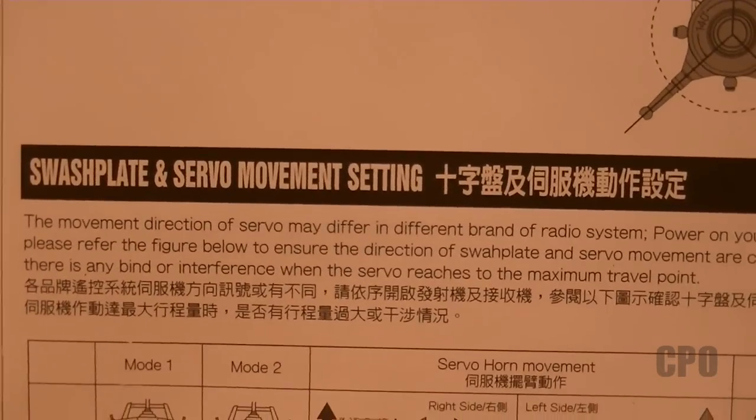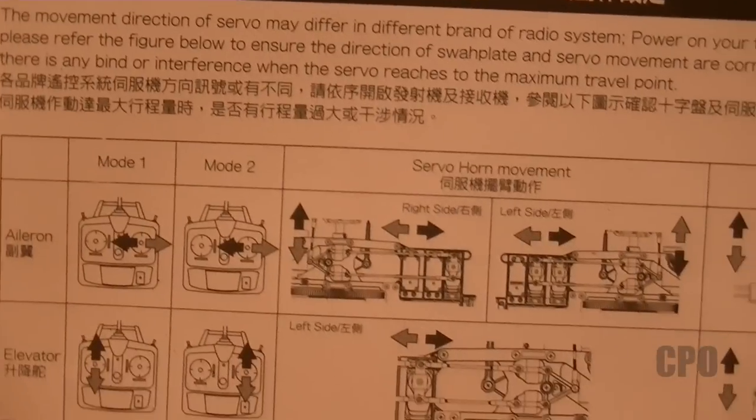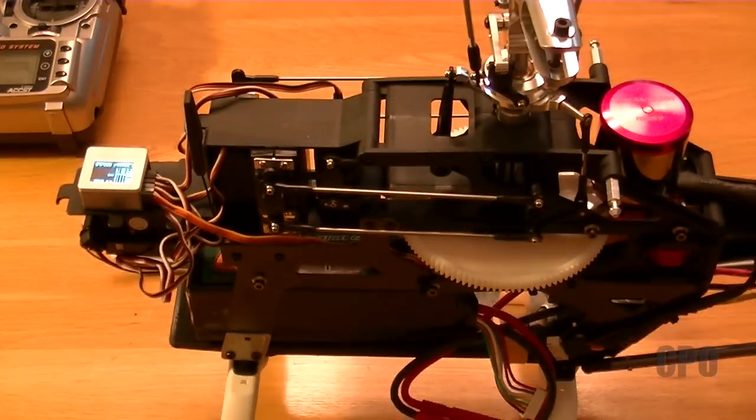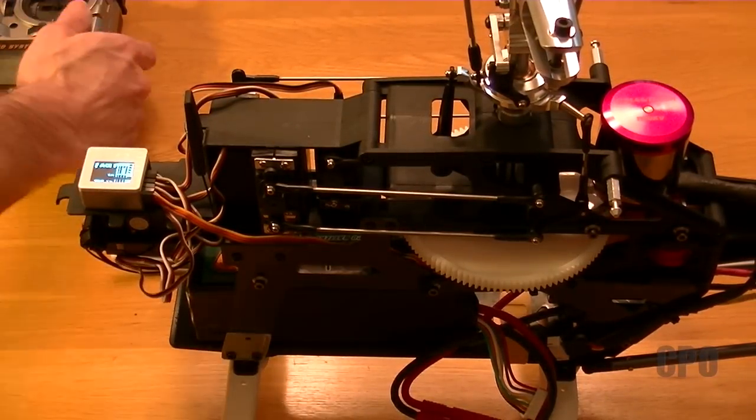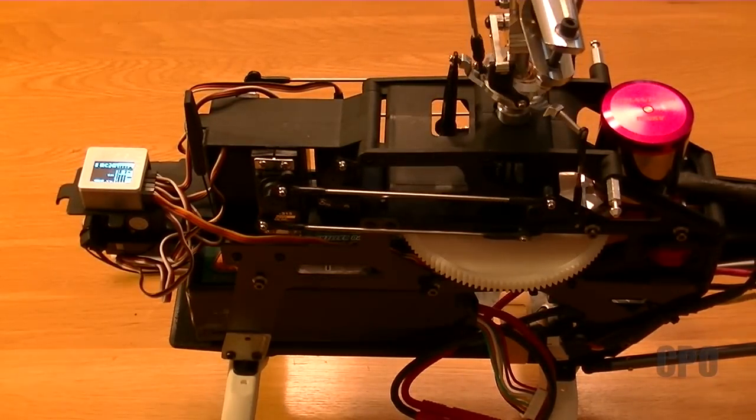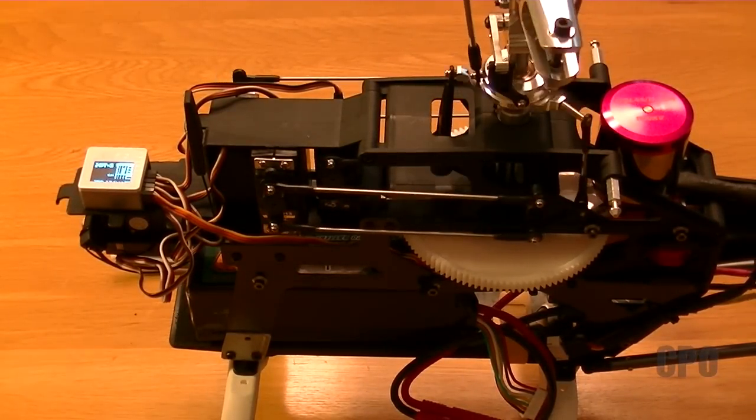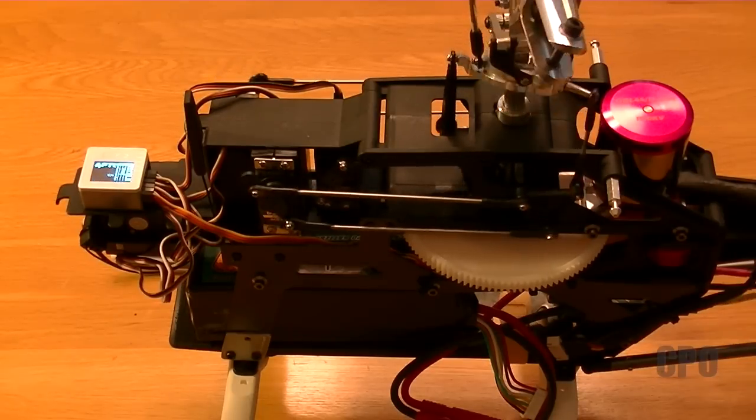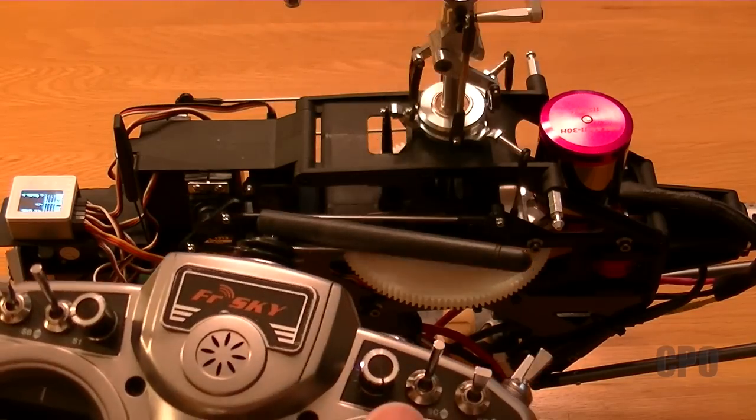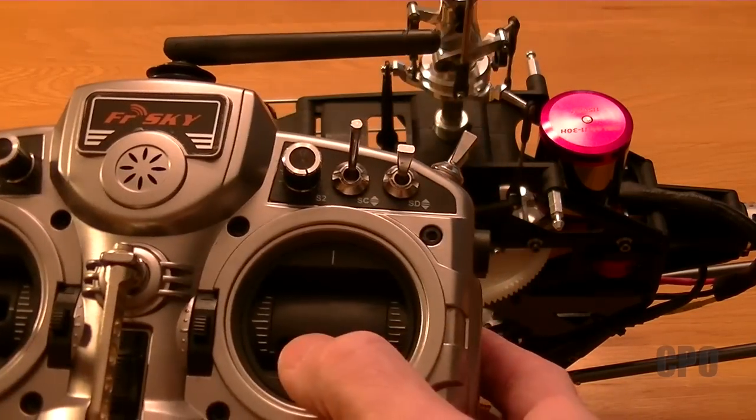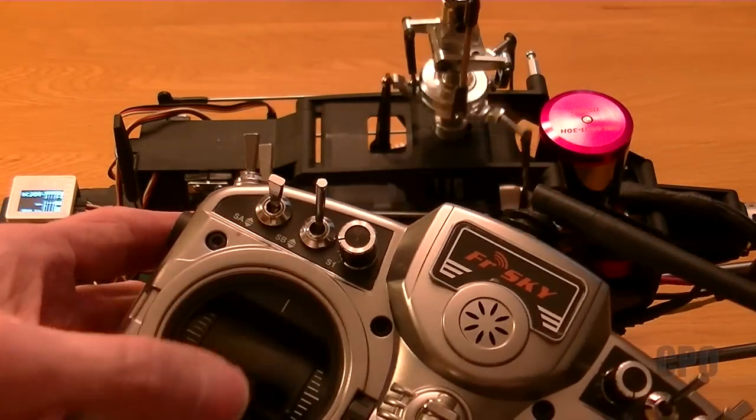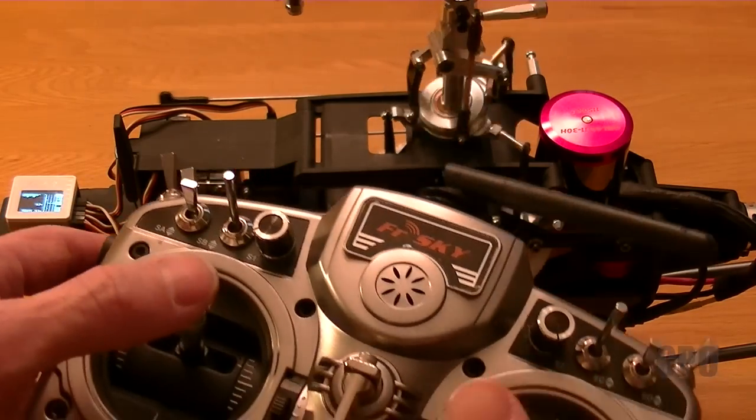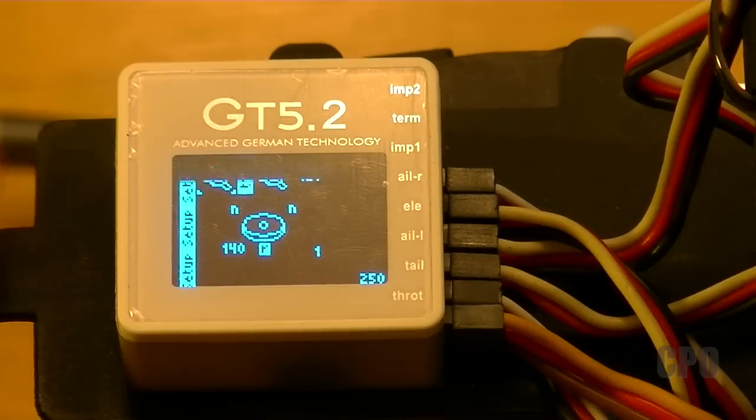Now let's take a look at our swash plate movement and how our servos are moving the system when we move our sticks. I have a mode two transmitter so my left stick is going to be throttle and pitch, in this case collective pitch. Right stick is cyclic, aileron and elevator. But as you can see here when I move my elevator forward and back I get more of a pitch type response. And when I move my pitch I get more of an elevator type response. So something is clearly mixed up.